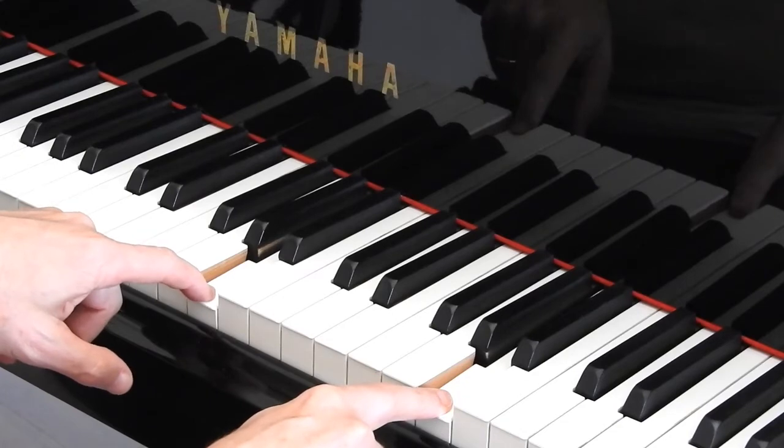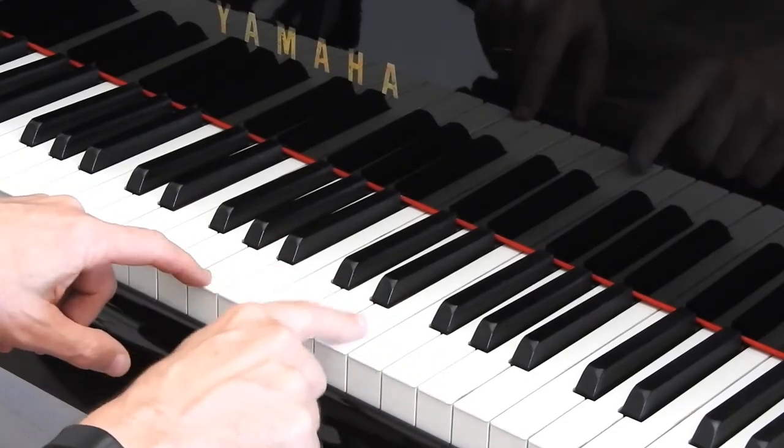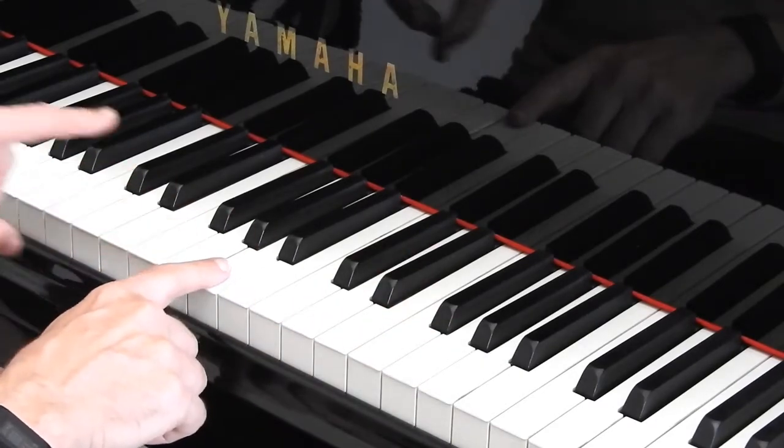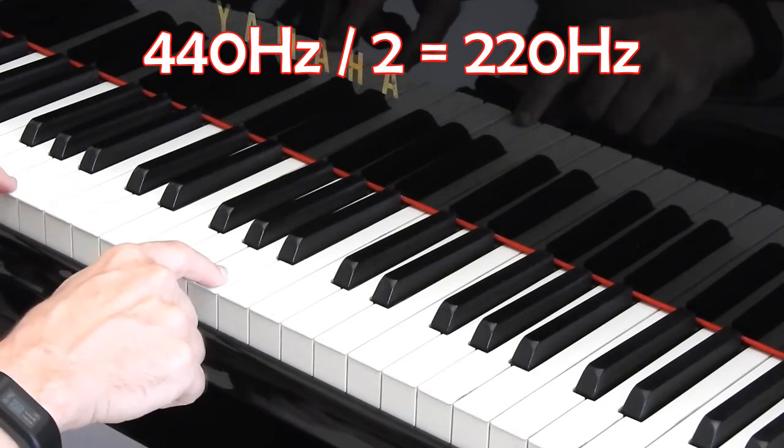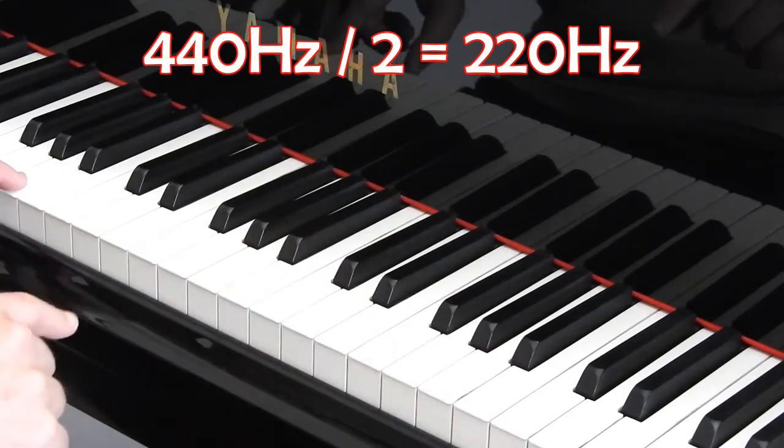Those are both A's, and they're what's called an octave, octave meaning eight, one, two, three, four, five, six, seven, eight notes apart. You can also go down an octave. So if this is 440, then this is 220 Hertz. Those are all A's.